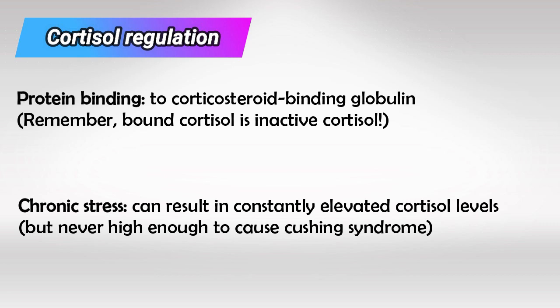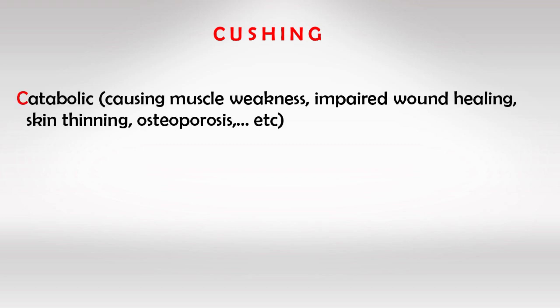Other stress hormones are epinephrine and glucagon. To remember the key features and functions of cortisol, I use the word CUSHING, because elevated levels of cortisol can cause Cushing syndrome. C is for catabolic effects — cortisol will cause destruction of the bone, the skin, and the muscles.